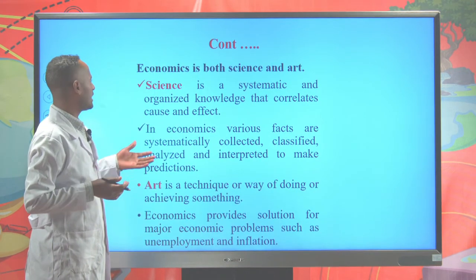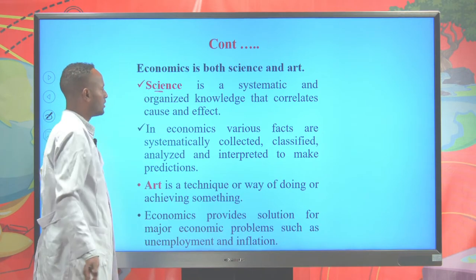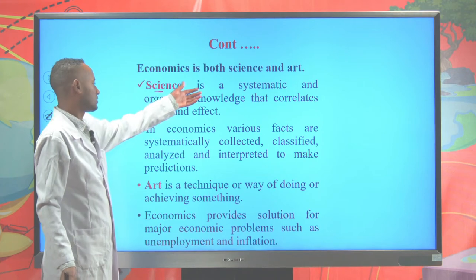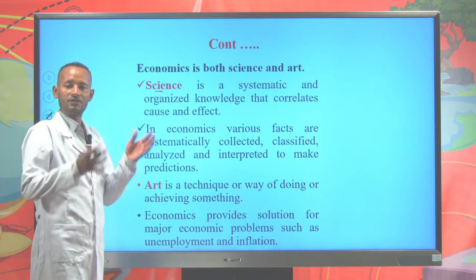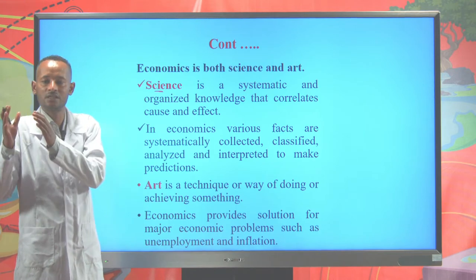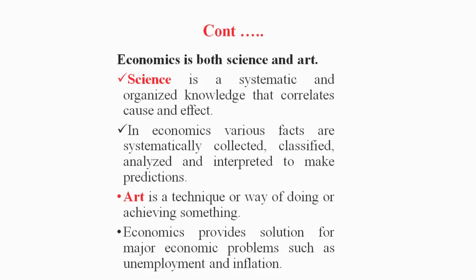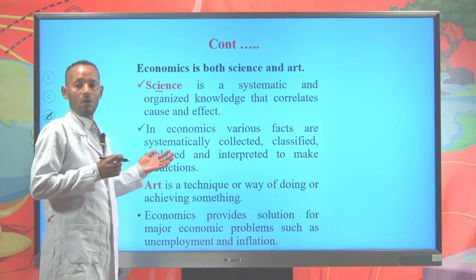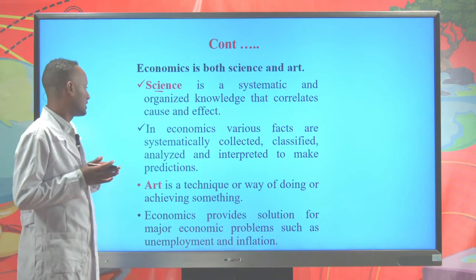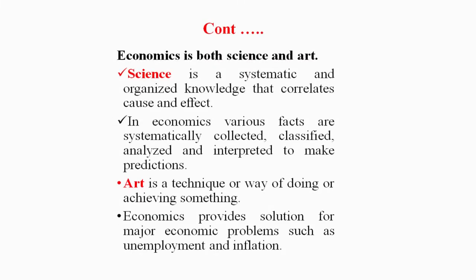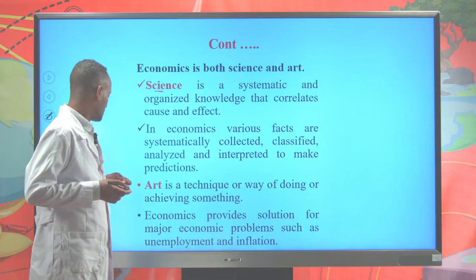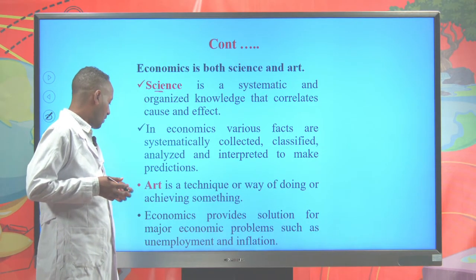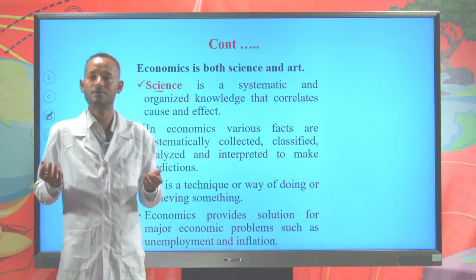Economics is both science and art. Science is a systematic and organized body of knowledge that correlates cause and effect. In economics, we observe various factors systematically, collect and classify them, and after analysis we make interpretations. Economics is considered a science because it involves causes and effects. Art is a technique or way of doing or achieving something.